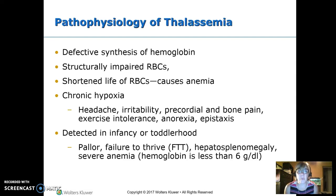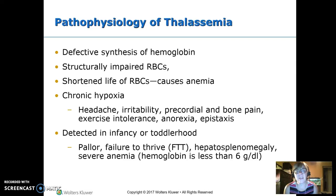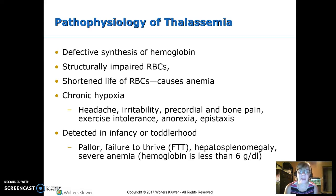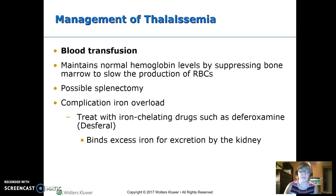The patient is chronically hypoxic because red blood cells carry oxygen. Symptoms include headache, irritability, precordial and bone pain, exercise intolerance, anorexia, and epistaxis — all from chronic hypoxia. We want to detect this early. Look for pallor, not cyanosis. It will affect growth, causing failure to thrive, along with an enlarged spleen and liver. The anemia in beta thalassemia will be severe.